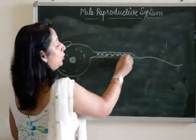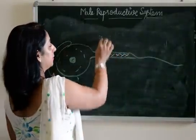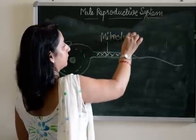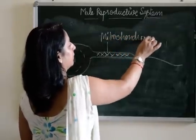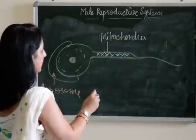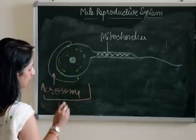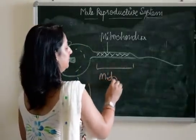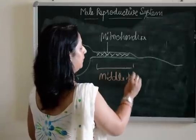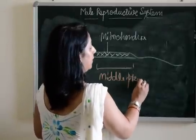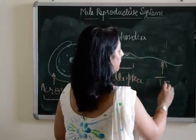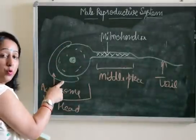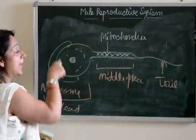The middle piece has mitochondria in it. So to label the parts: the head part contains the acrosome and nucleus, the middle piece contains the mitochondria, and the tail is the third part.